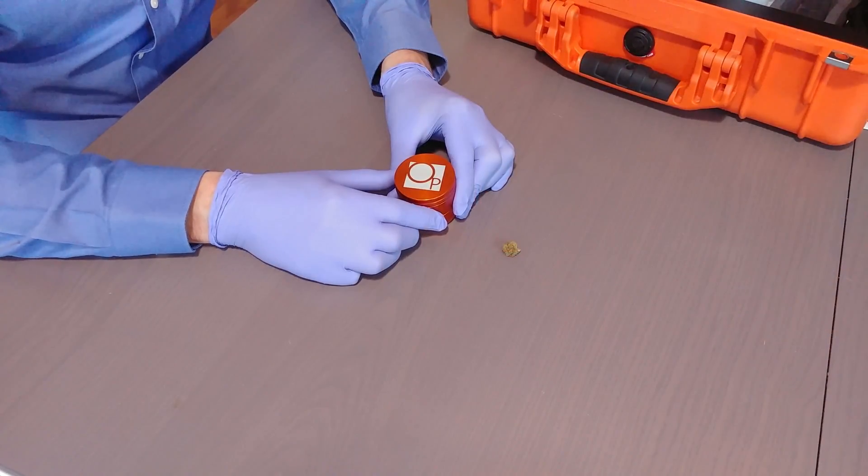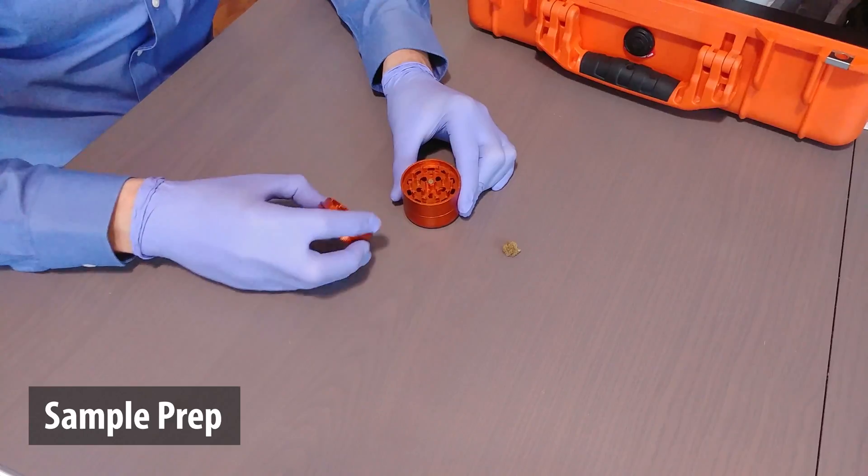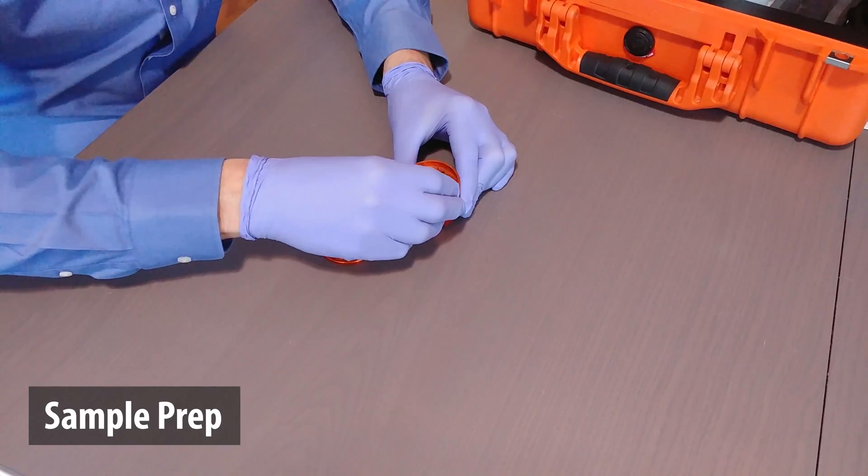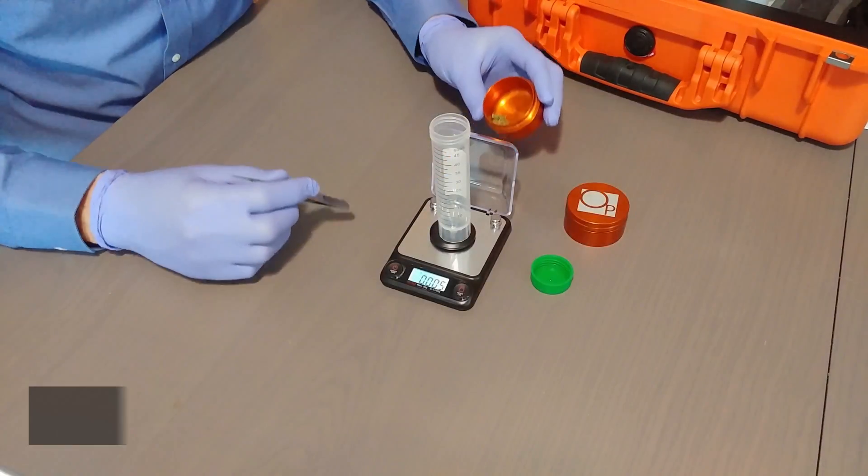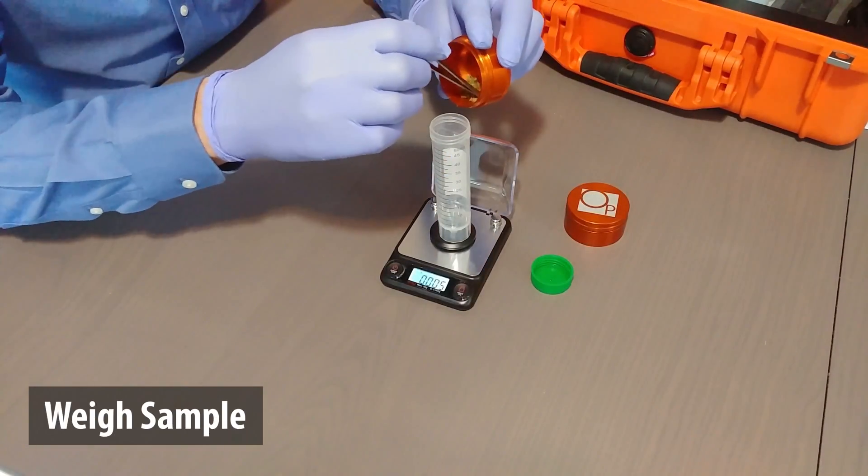The first step is to prepare your sample by grinding it up. The next step is to weigh out the appropriate amount of sample.